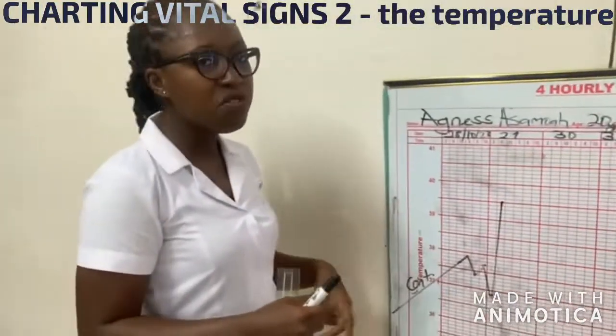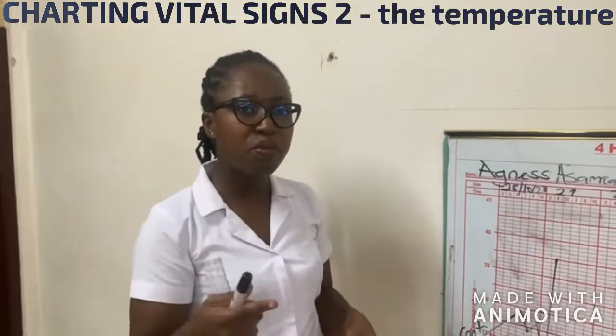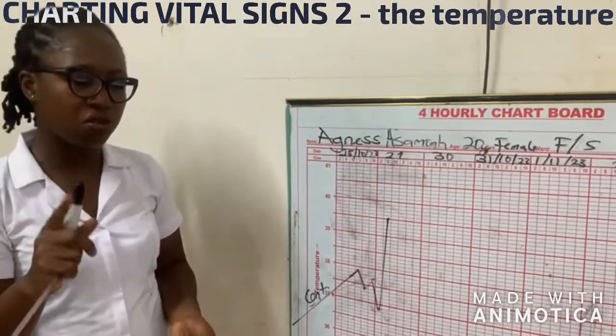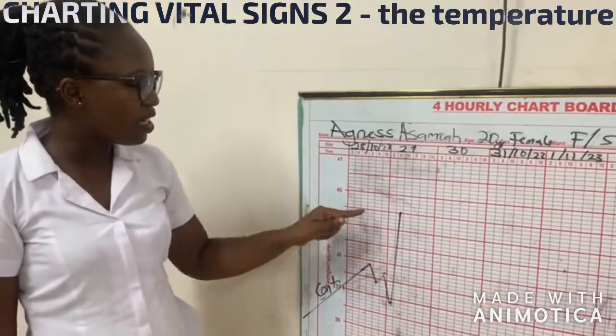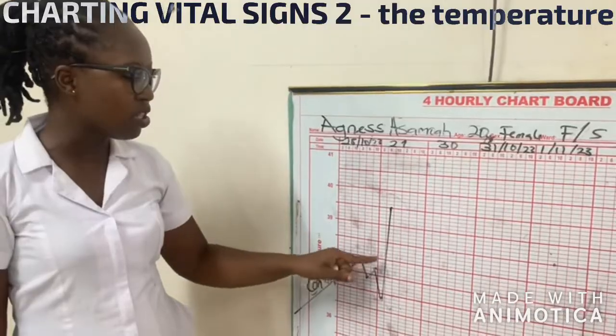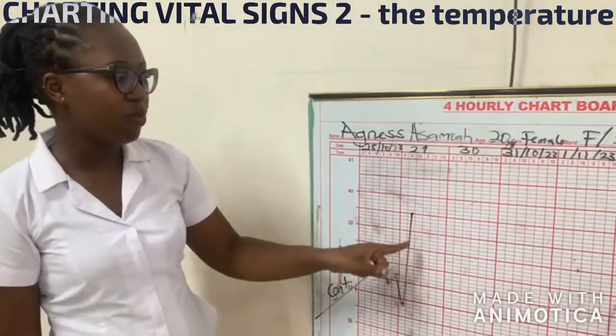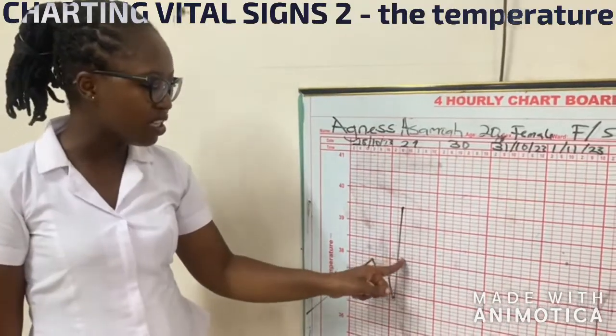So when the temperature is 39.5, you have to bring it down by sponging the patient or giving medication or doing both. Usually we use tepid sponging. When you tepid sponge, we expect temperature to drop by one degree Celsius. So after sponging 39.5, we are expected to drop to 38.5. So we did that, same time. This is saying you sponged patient and it has dropped to 38.5.